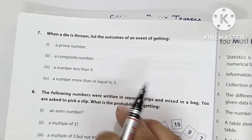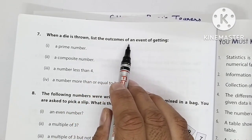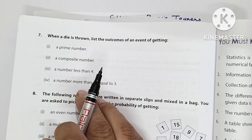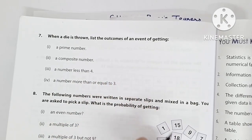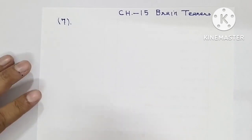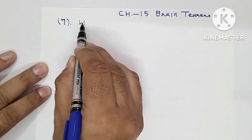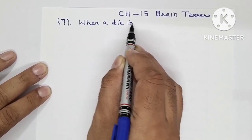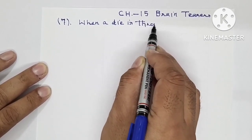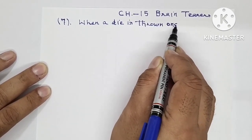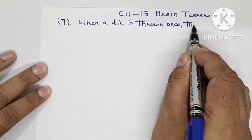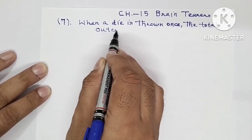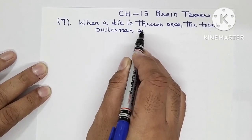So what is the question: when a die is thrown, list the outcomes of an event getting a prime number. Here we are not supposed to find the probability, only we are to list the outcomes. So let's start doing the solution. When a die is thrown once, the total outcomes are 6.